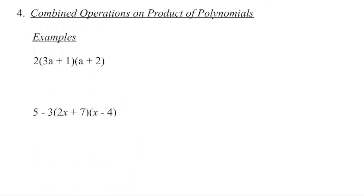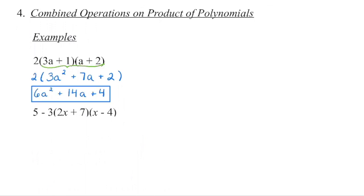The final thing in this lesson is if we have multiple operations on polynomials. For example, 2 times (3a+1)(a+2). The easiest way is to multiply the two binomials together first, then bring down the 2. FOIL gives us 3a squared plus 6a plus 1a — which is 7a — plus 2. Then distribute that 2 in. Check for like terms — there are none — so that gives us our final answer.